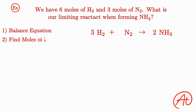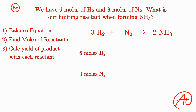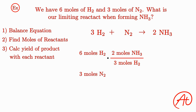Next, we want to find the moles of each reactant. For this example, this step is really easy — they already gave us that. We have 6 moles of hydrogen and 3 moles of nitrogen. Then we want to calculate how much of the product we can theoretically make for each reactant. For hydrogen, we're starting with 6 moles, and from our balanced equation, to make 2 ammonias we need 3 diatomic hydrogens. Multiplying across, if we completely use up all 6 moles of hydrogen, we could theoretically make 4 moles of ammonia.